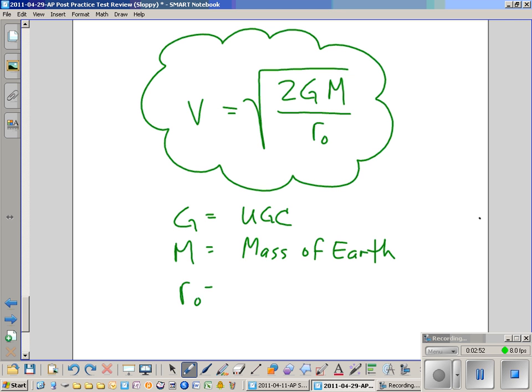And then r₀ is equal to Earth's radius, and that's all based on the fact of what our gravitational field is right here. That's the end of that. V is equal to the square root of 2GM over r₀, that is v as our escape velocity.